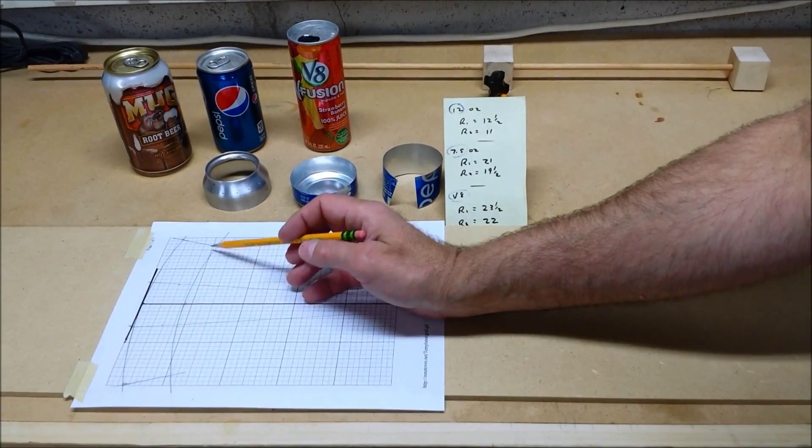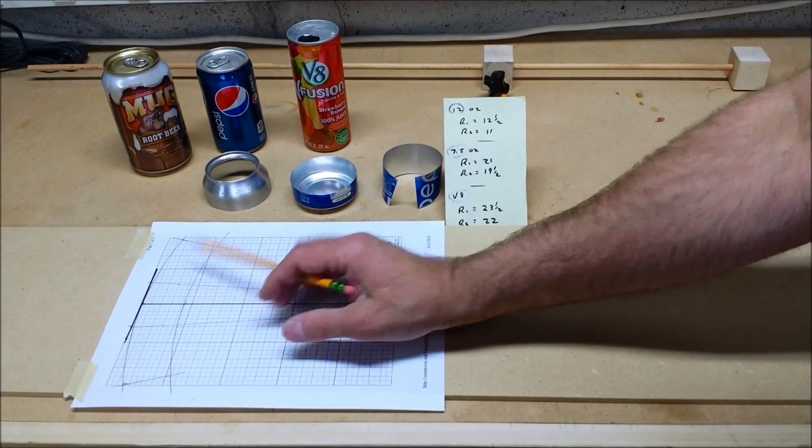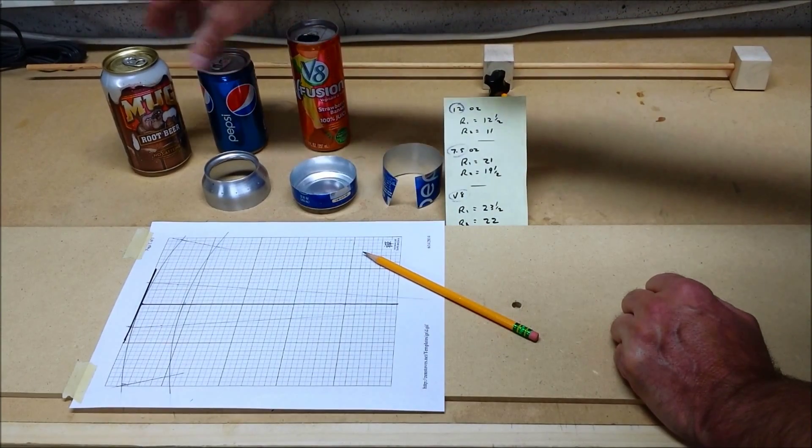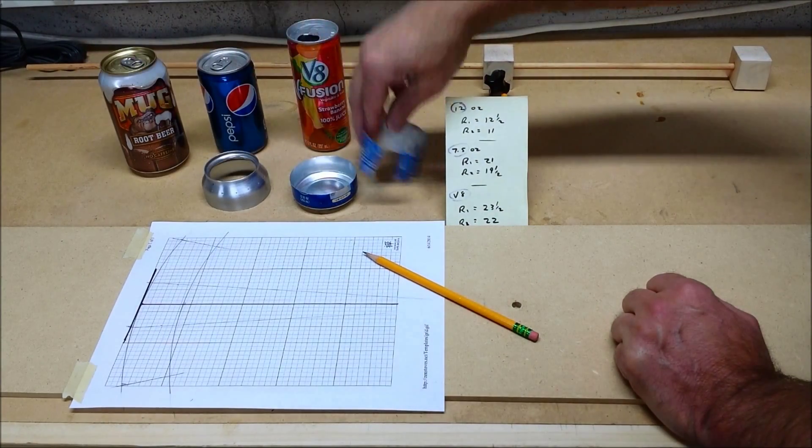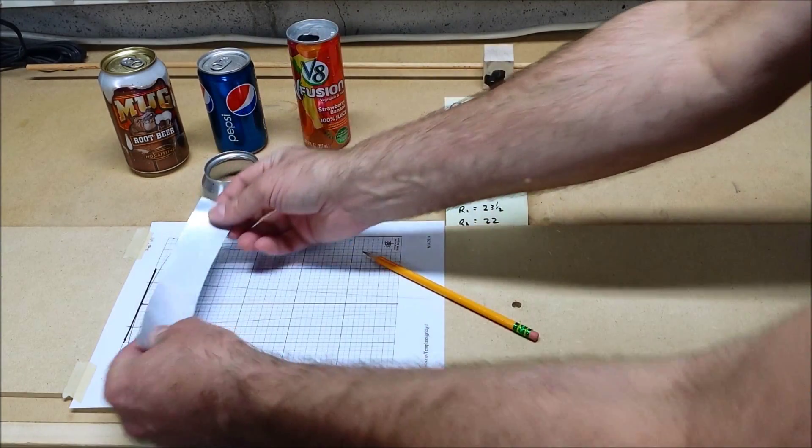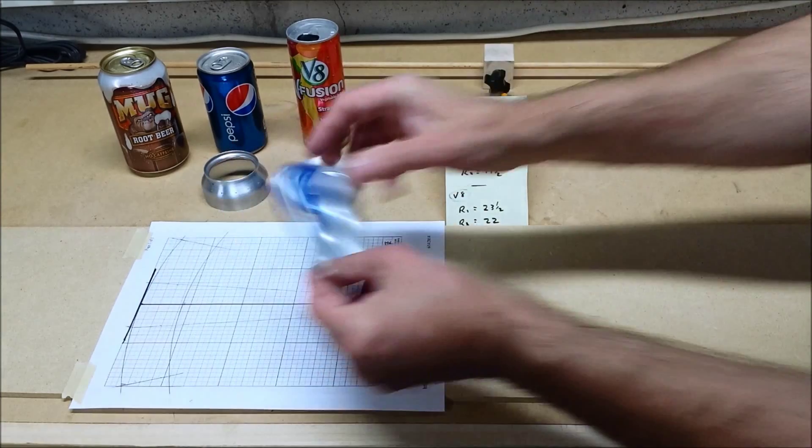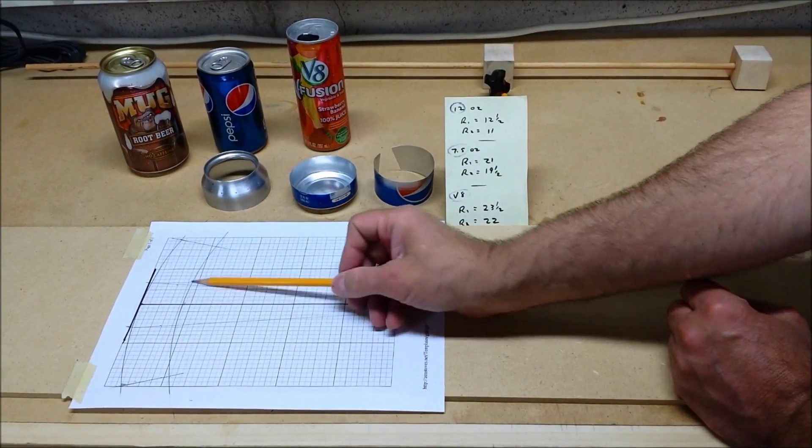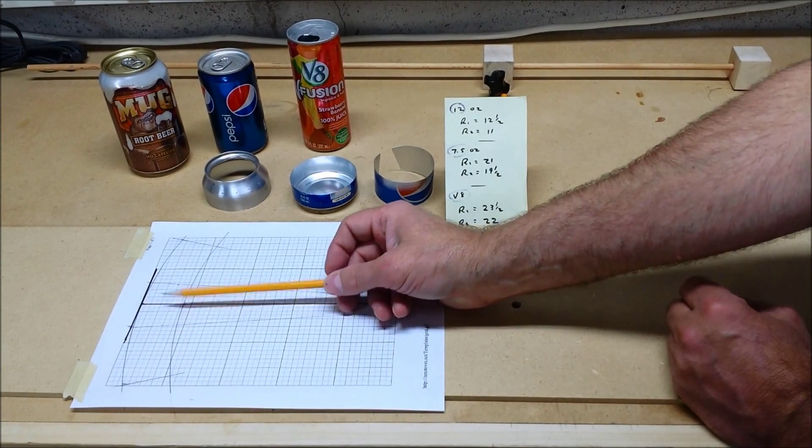You can cut your template out of paper, stiff cardboard. If you're only going to make one can, one stove, you can unroll that inner can and draw directly on the aluminum. I plan on making more than one can. So I'm actually going to cut mine out of this quarter-inch MDF for permanent templates.